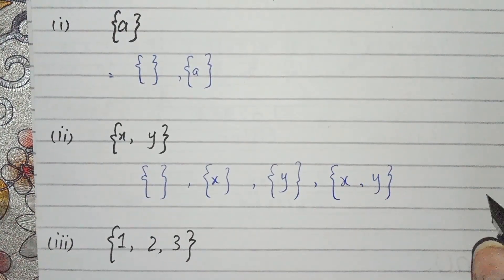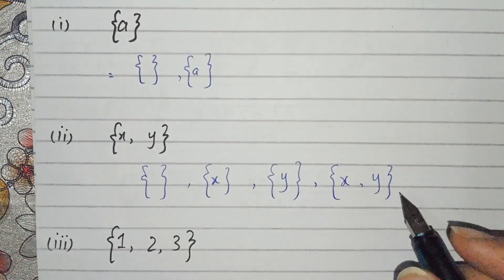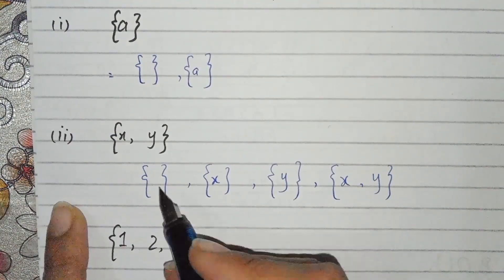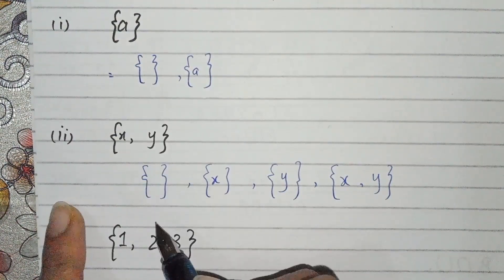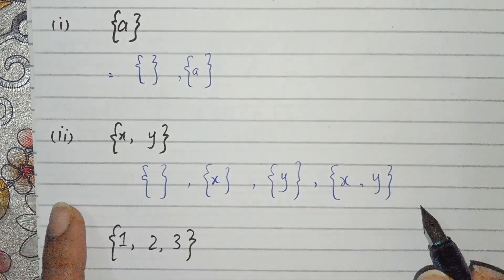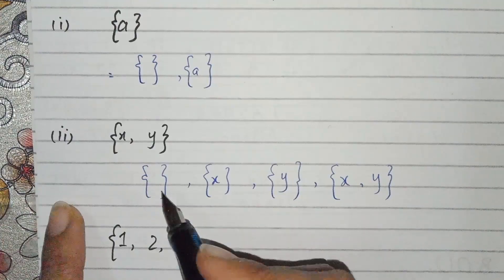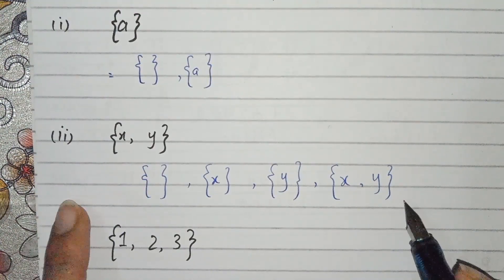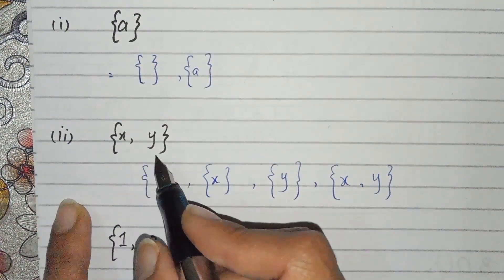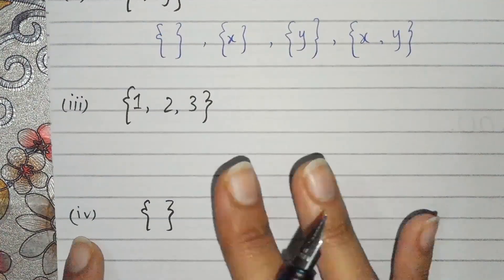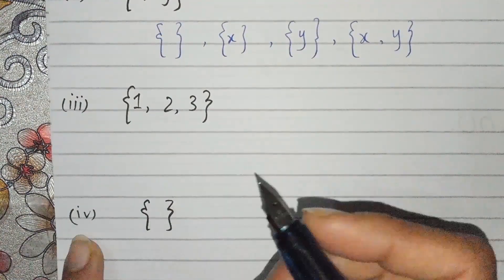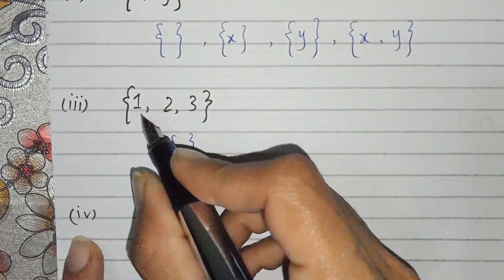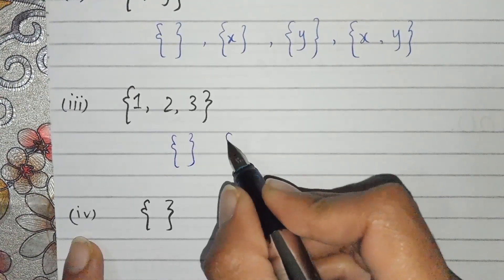These are all the subsets of this set. These are the members of the power set, and we can see that these are the power members of the power set of this set.